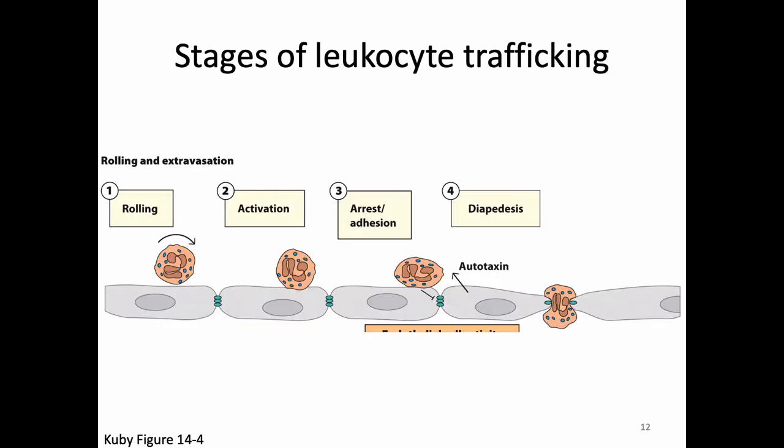The steps of leukocyte trafficking are shown here. There are technically four steps, but the three I focus on most are the first three because we discuss them in more detail. These steps are known as rolling, activation, and arrest or adhesion, followed by diapedesis. I'm not strict about the exact name you use, but I do want you to be clear about which step you're referring to at each different time.